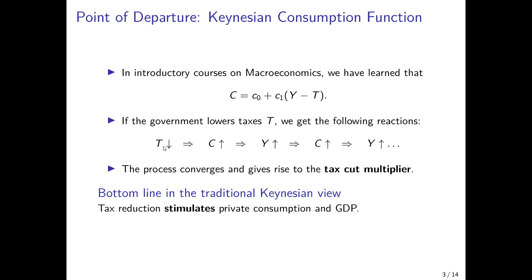Therefore, if in this setting the government lowers taxes T, this leads to an increase in consumption. Since the traditional Keynesian view holds that the economy is not at full employment, this additional demand leads to additional output, additional workers employed, and so on. This in turn raises income, which again raises consumption, giving rise to the tax cut multiplier — which shows to what extent overall consumption and income increase when the government decreases taxes, and is typically larger than one.